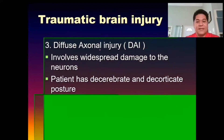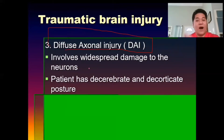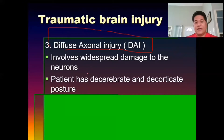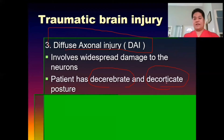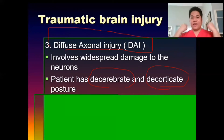Next is DAI, or diffuse axonal injury. It involves widespread damage to the neurons. For instance, in a vehicular accident with severe head injury, the client would present with decerebrate and decorticate posture. At the moment of impact, the client would have seizure-like activity — decorticate and decerebrate — like a grand mal tonic-clonic seizure.